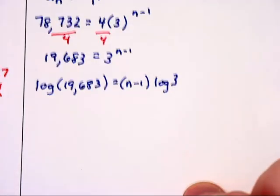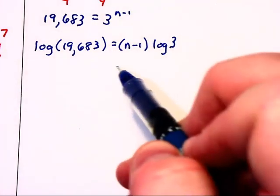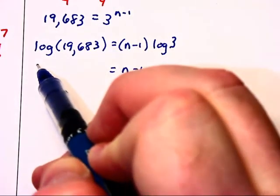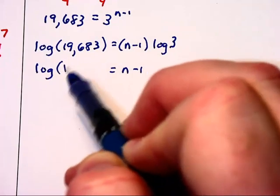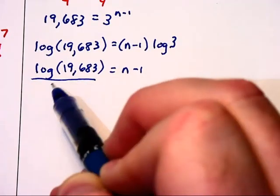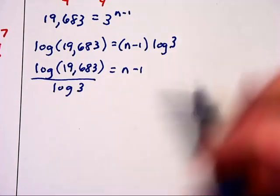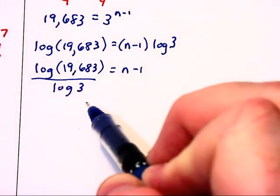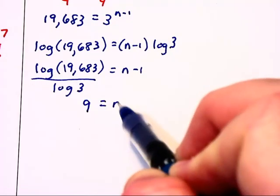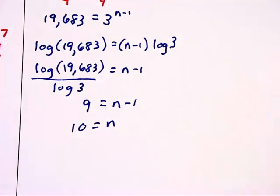I would then divide the log off of each side to get N minus 1 by itself on the right. So, we will have the log of this 19,683 divided by the log of 3. At which point, we could evaluate the left side to get 9 equals N minus 1 and find out that we've actually gone 10 terms out.